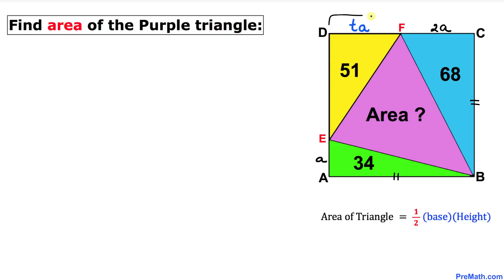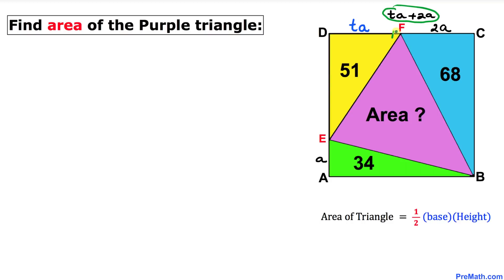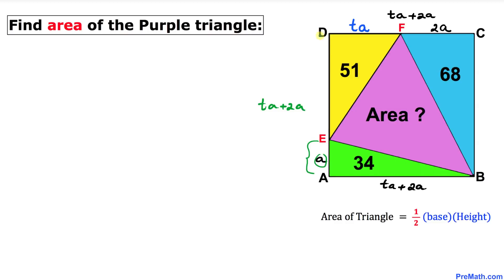The whole length is going to be ta plus 2a. Since we are dealing with square ABCD, one side length is ta plus 2a, and since all sides of a square are equal, each side length is ta plus 2a. This side length is also going to be ta plus a.